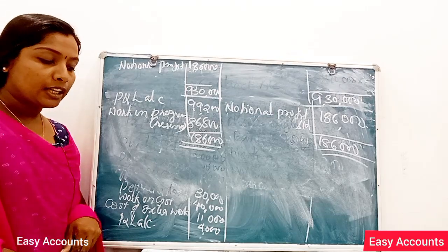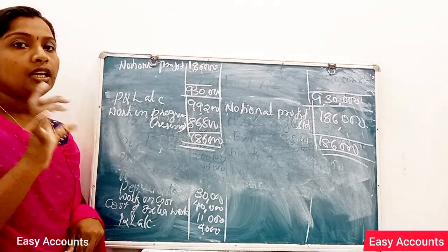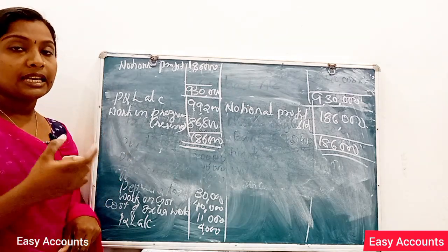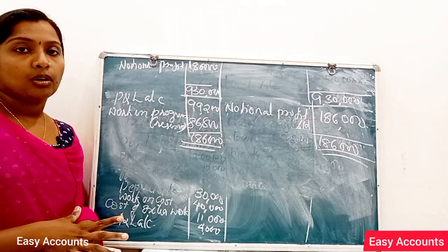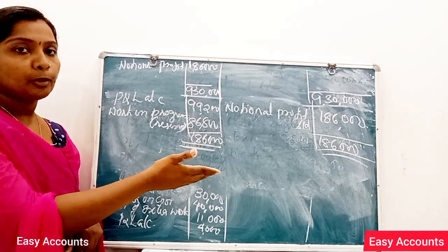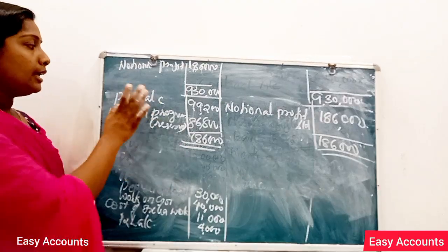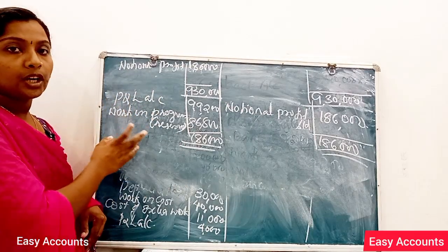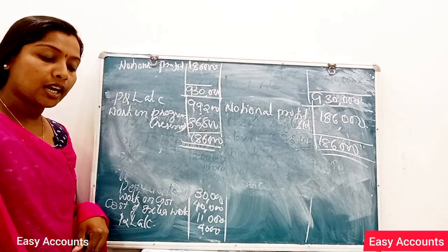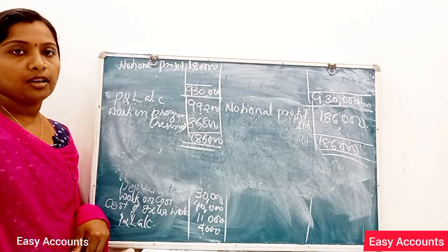Working progress account — we call it contract account. The credit side, we call working progress. We call work certified and work uncertified. We call it debit side to contract account. The credit side is $7,50. If the credit side is $7,000, we call it debit side to contract. How do we call it $6,50 or $8,50? We call it balance. That is the working progress.